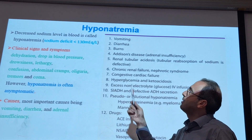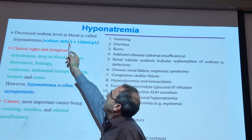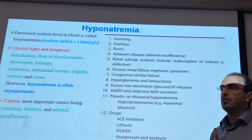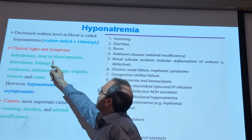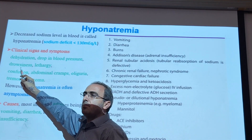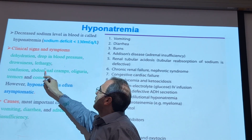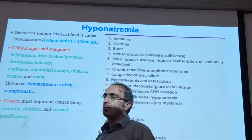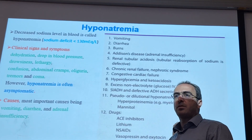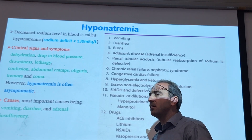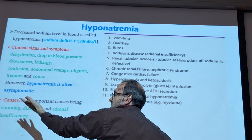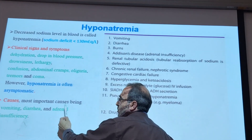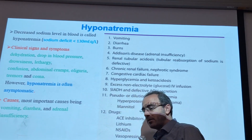Oliguria means the volume of urine is decreased. Hypernatremia sometimes is asymptomatic and we can't detect it. The most important causes of hyponatremia are vomiting, diarrhea, and adrenal insufficiency. Also burns, Addison's disease — which means adrenal insufficiency — and drugs like ACE inhibitors are important. The causes can be excessive fluid losses due to kidney dysfunction, from skin due to massive sweating or cystic fibrosis, from the gut via vomiting, diarrhea, or fistula, or inadequate intake.